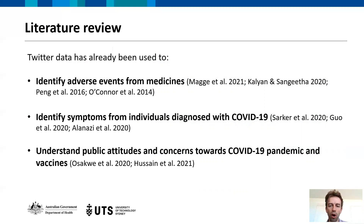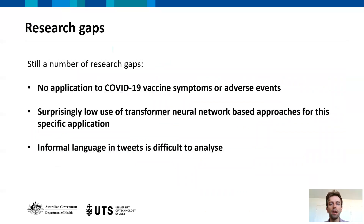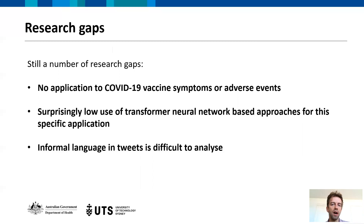Other studies have found that Twitter data can be used to better understand public attitudes and concerns towards the COVID-19 pandemic and vaccines. We did a quick review at the start of the year — with a big focus in January and February — and at that time couldn't find anything using these kinds of techniques for COVID-19 vaccine symptoms or adverse events. While there was some work in this space, there wasn't much using transformer neural networks. One ongoing challenge with social media data is trying to analyze informal language, which makes it particularly tricky.